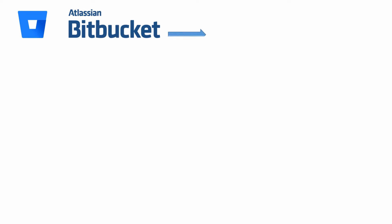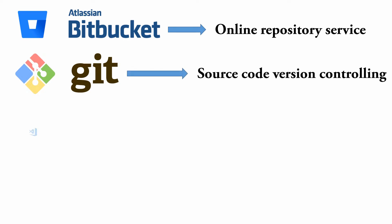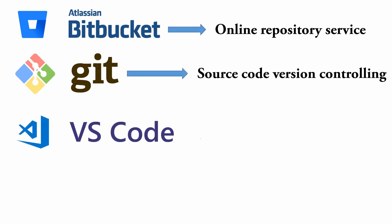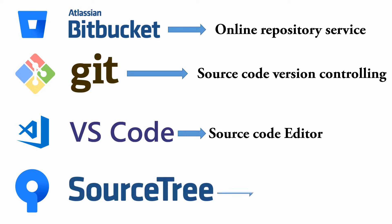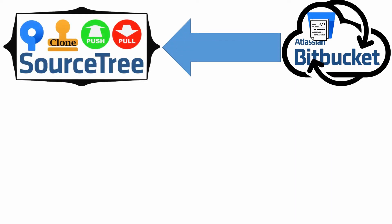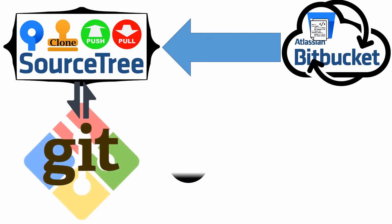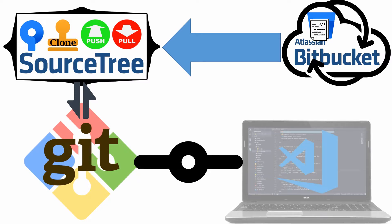For this tutorial we need the following assets: Bitbucket as an online repository service, Git for source version controlling, Visual Studio Code as a source code editor, and SourceTree — a Git graphical user interface that offers a visual representation of your repositories. First I'd like to install and configure those systems, and then I will show an animated overview of how Bitbucket, Git, Visual Studio Code, and SourceTree interact with each other for source code sharing in an online repository.